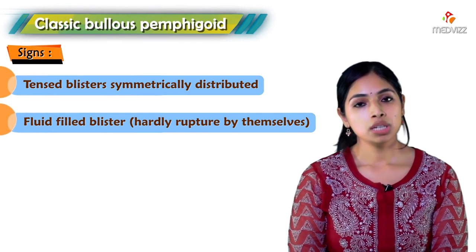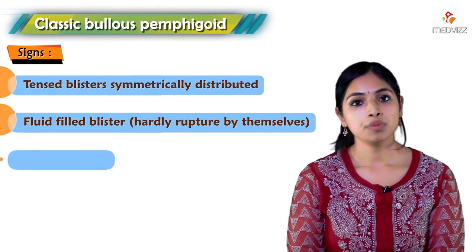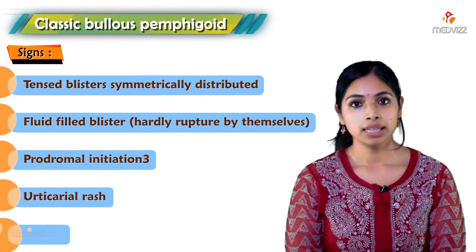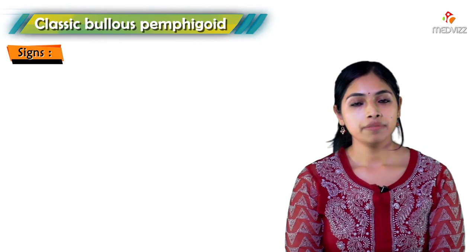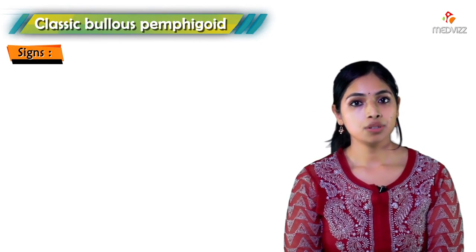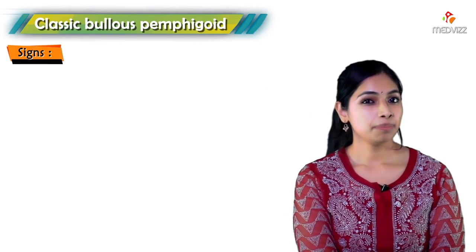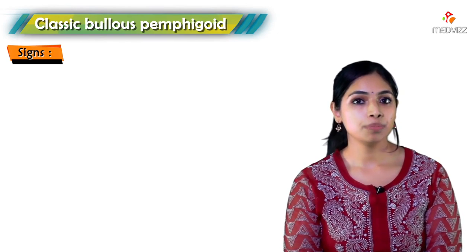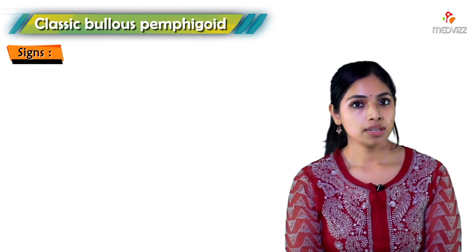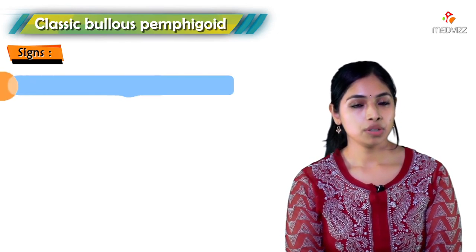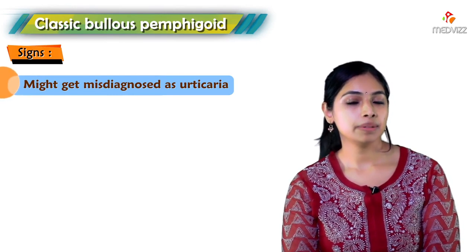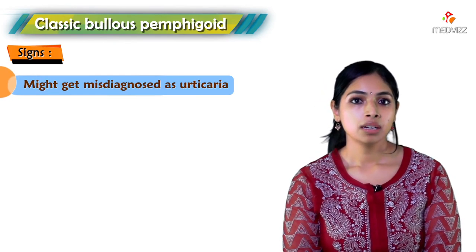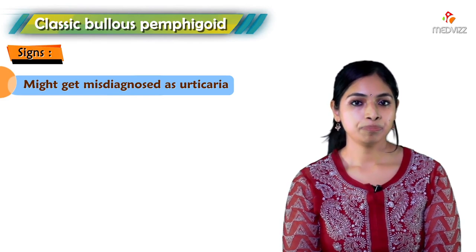In bullous pemphigoid, the disease often begins with a prodrome. There is an urticarial rash and itching, and this prodrome can vary from person to person. When we see a patient in the prodromal stage, we cannot diagnose it as bullous pemphigoid and it often leads to misdiagnosis — we might think of it as urticaria or some other clinical condition.